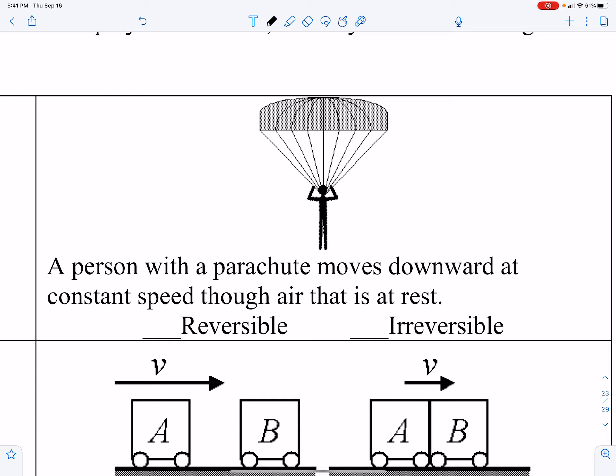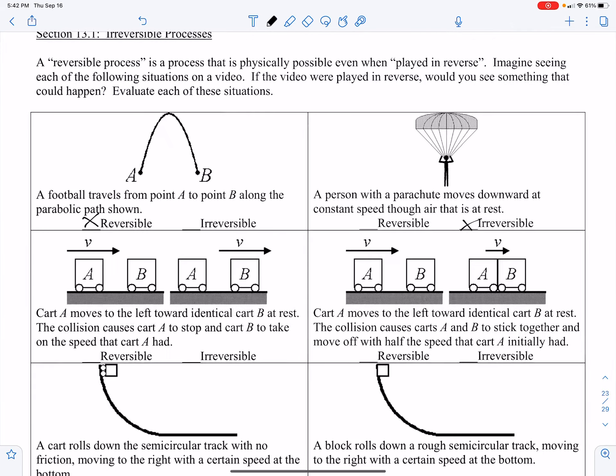A person with a parachute moves downward at a constant speed through air that is at rest. This is an irreversible process, being that the person would be dealing with air resistance at the time, and the air resistance is causing air friction. This is not something that could happen backwards.